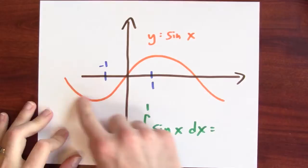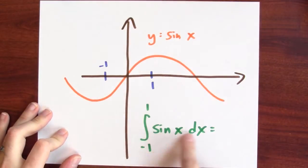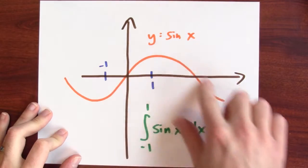What do we get if we integrate an odd function? For instance, what happens when we integrate the function sine x from minus 1 to 1? Sine x is an odd function. Consequently, it looks like the answer is 0.